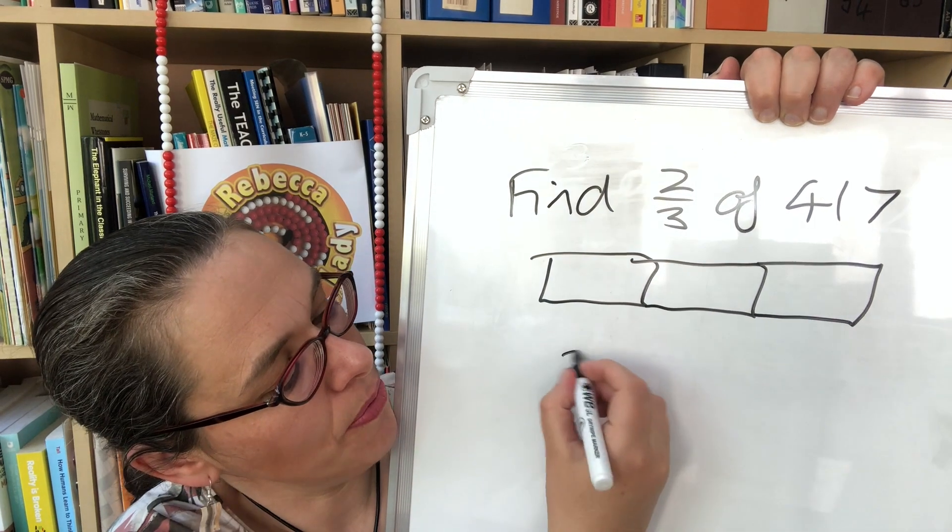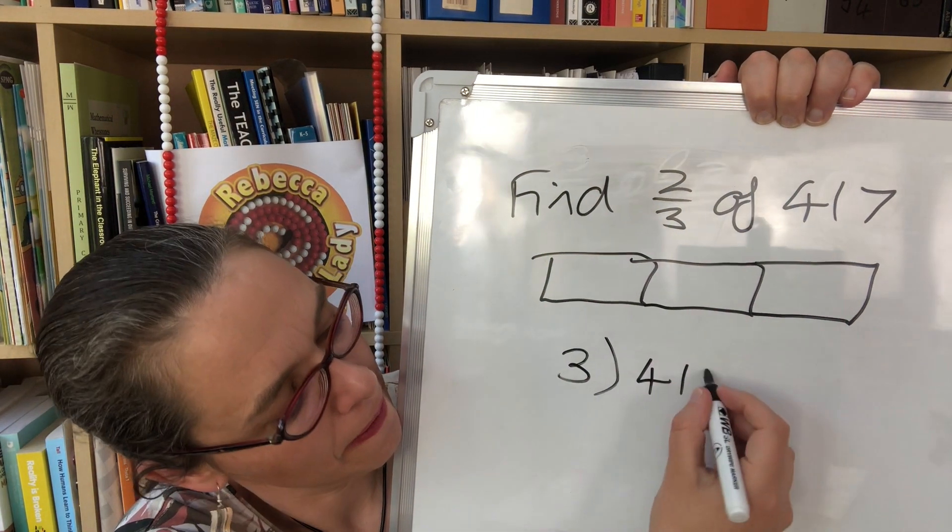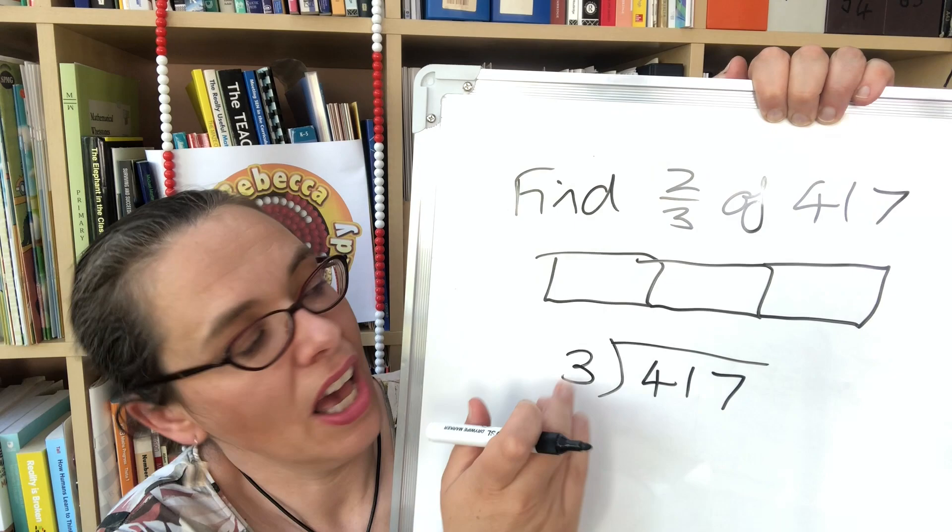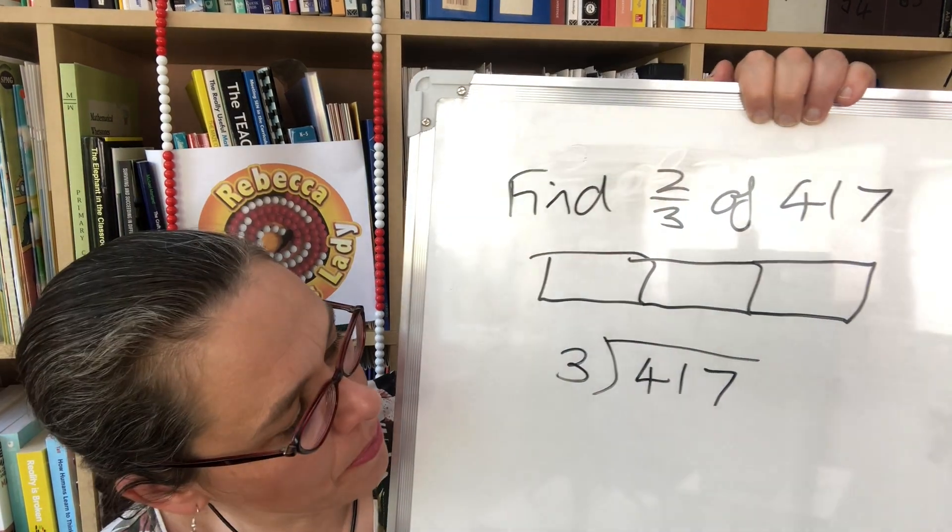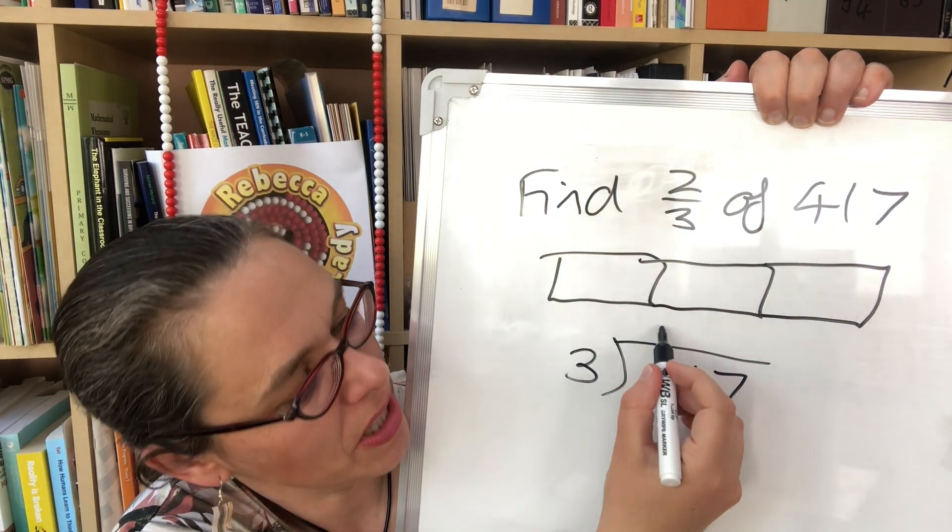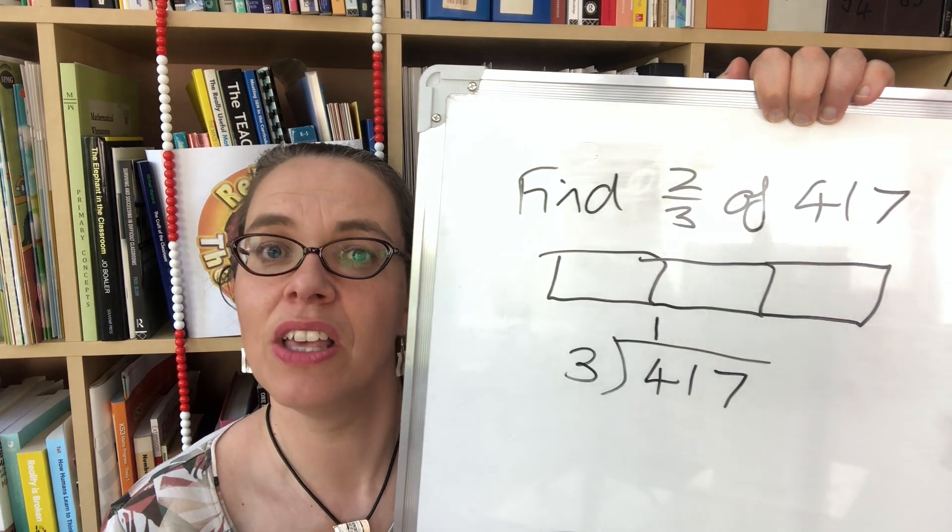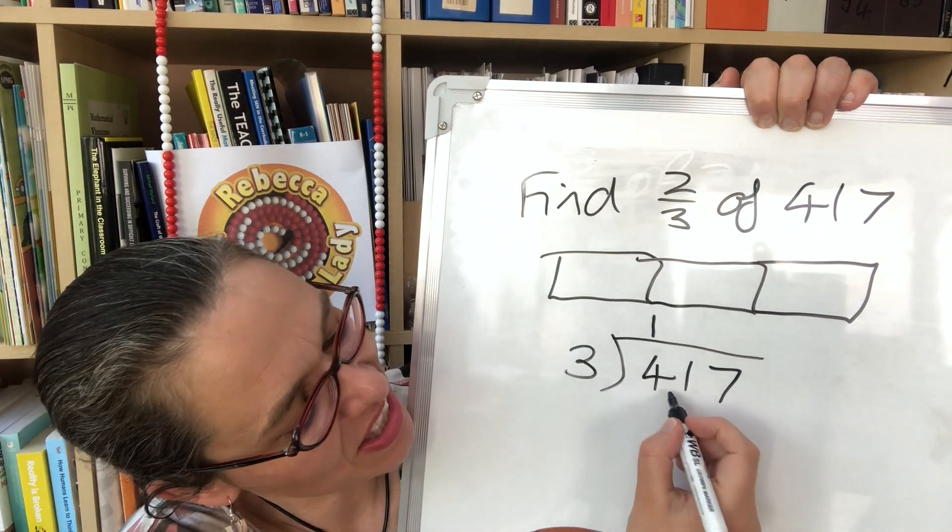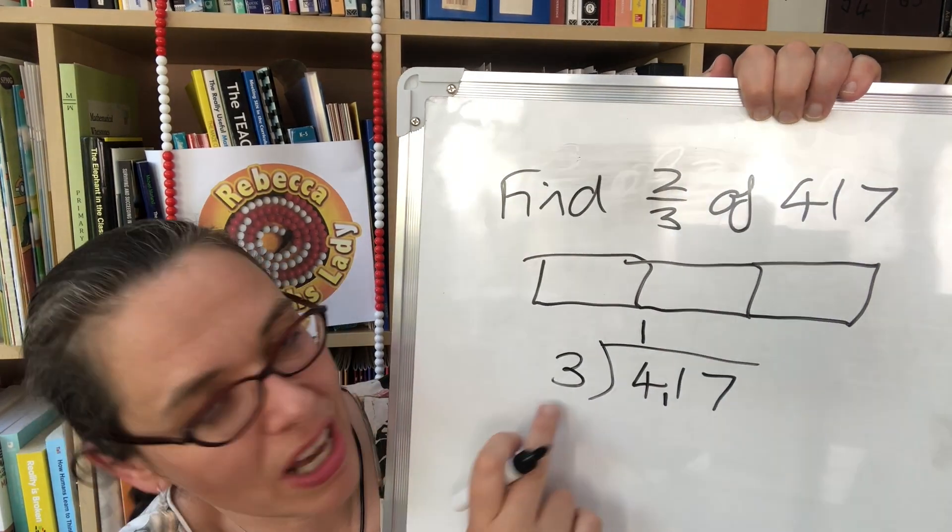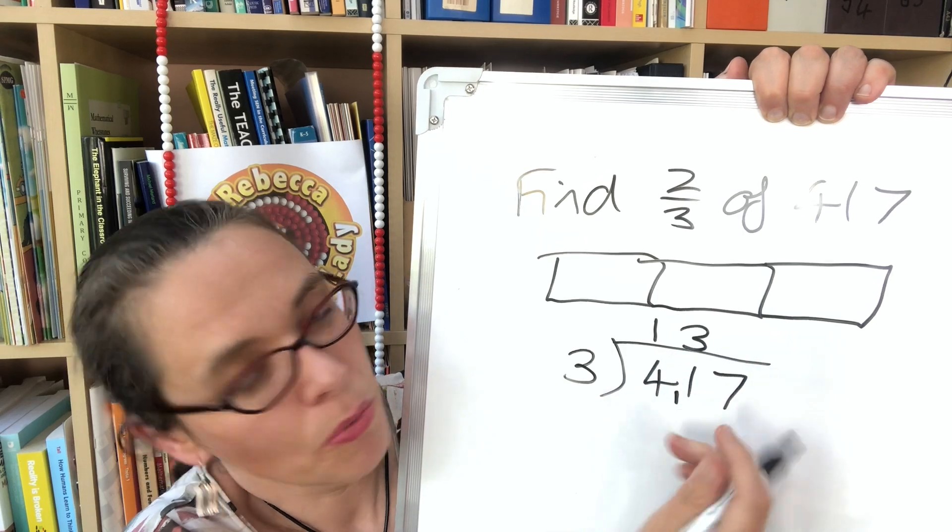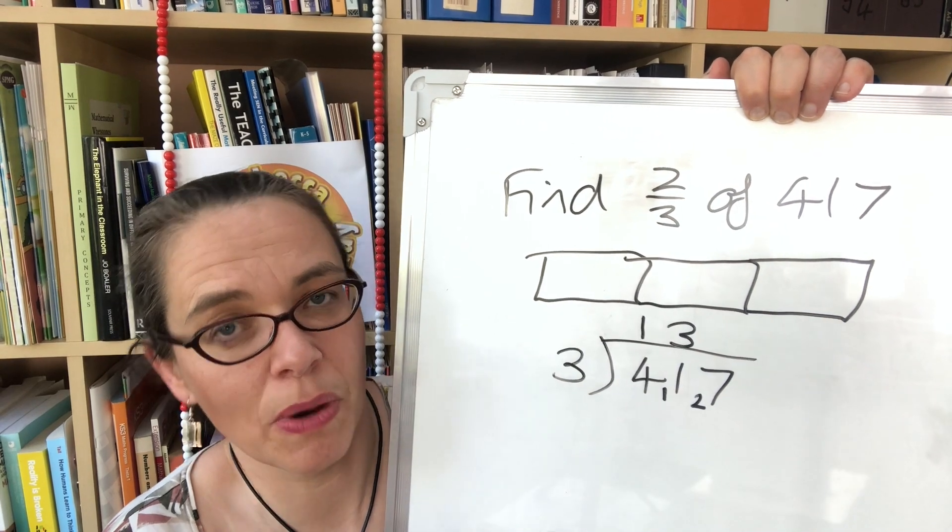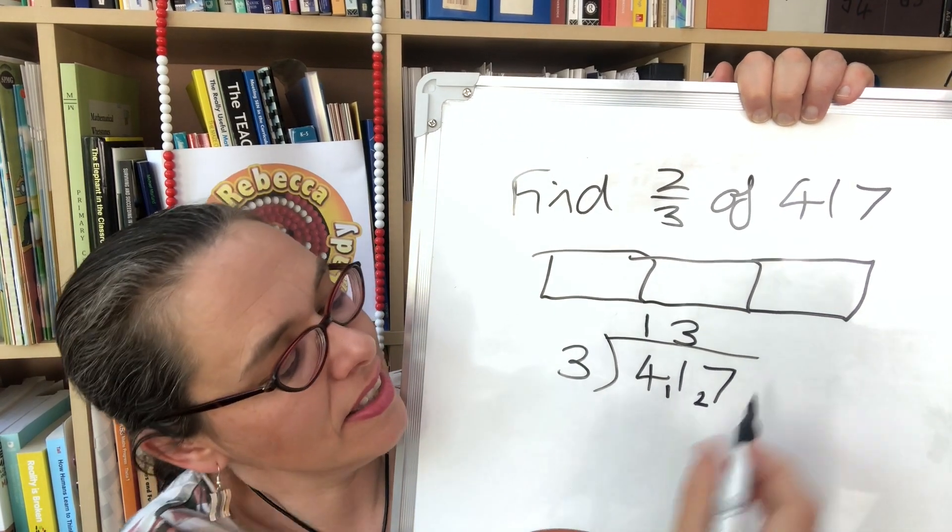So if we divide like that, we're going to share 417 into three equal parts and we're going to be able to put one part in each section here. So four hundreds if we share them fairly between three people each person gets one 100 and there's one left over that we need to break into tens. So that gives us 11 tens all together. And with 11 tens we can give each of our three people three tens. We've got two tens left over so that leaves us with 27 ones. And 27 ones when we share them fairly between three people is 9. So we've got 139 in each section.